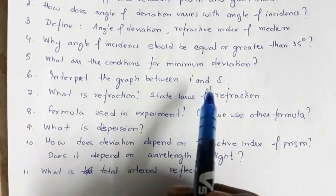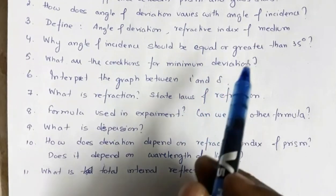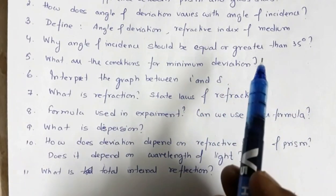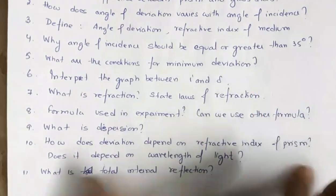Interpret the graph between angle of incidence and angle of deviation. The shape of the graph is parabolic. As the angle of incidence increases, angle of deviation decreases, acquires a minimum value and then again it increases.